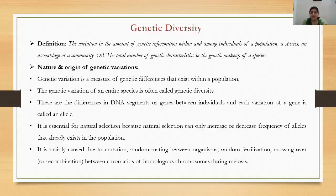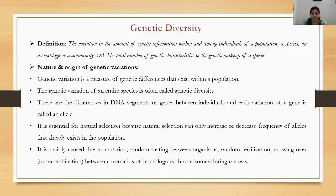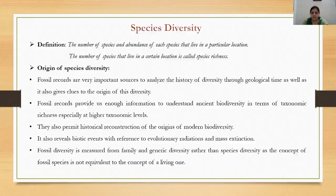There are differences in DNA segments or genes between individuals, and each variation of a gene is generally called an allele. It is very essential for natural selection because natural selection can only increase or decrease the frequency of alleles that already exist in the population. Genetic variation is mainly caused by mutation, random mating, random fertilization, and crossing over or recombination between chromatids of homologous chromosomes during meiosis.